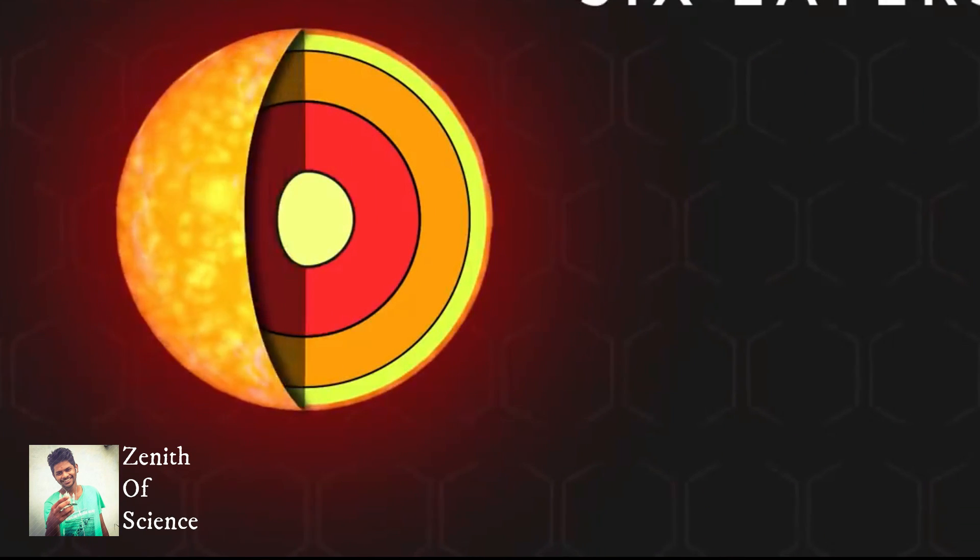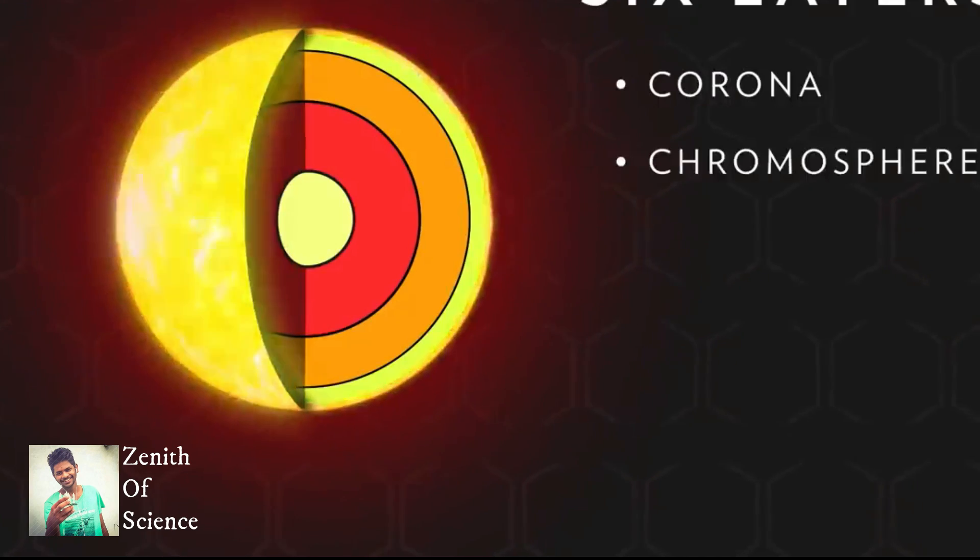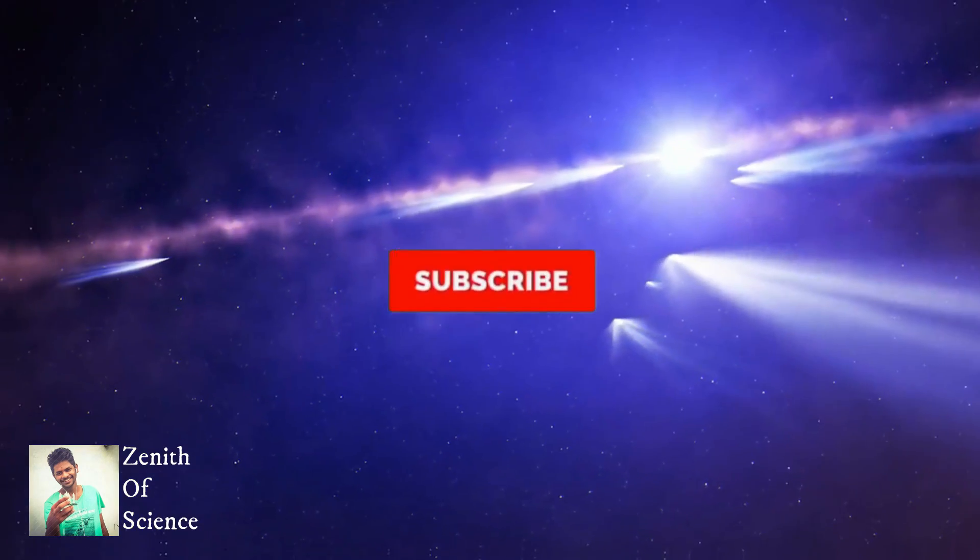The sun has three atmospheric layers. First is the photosphere. Second is the chromosphere. Third is the corona sphere, or corona.